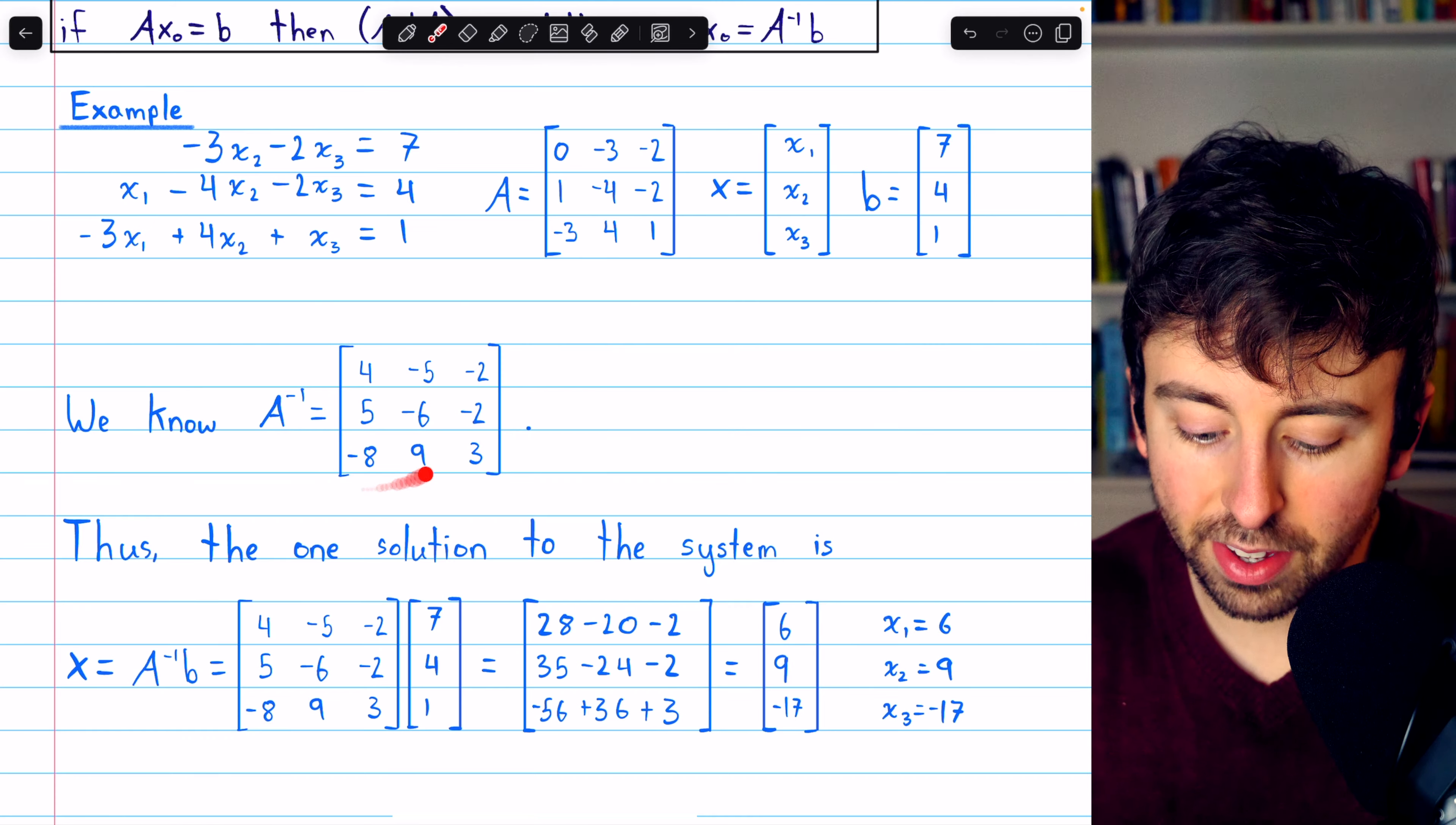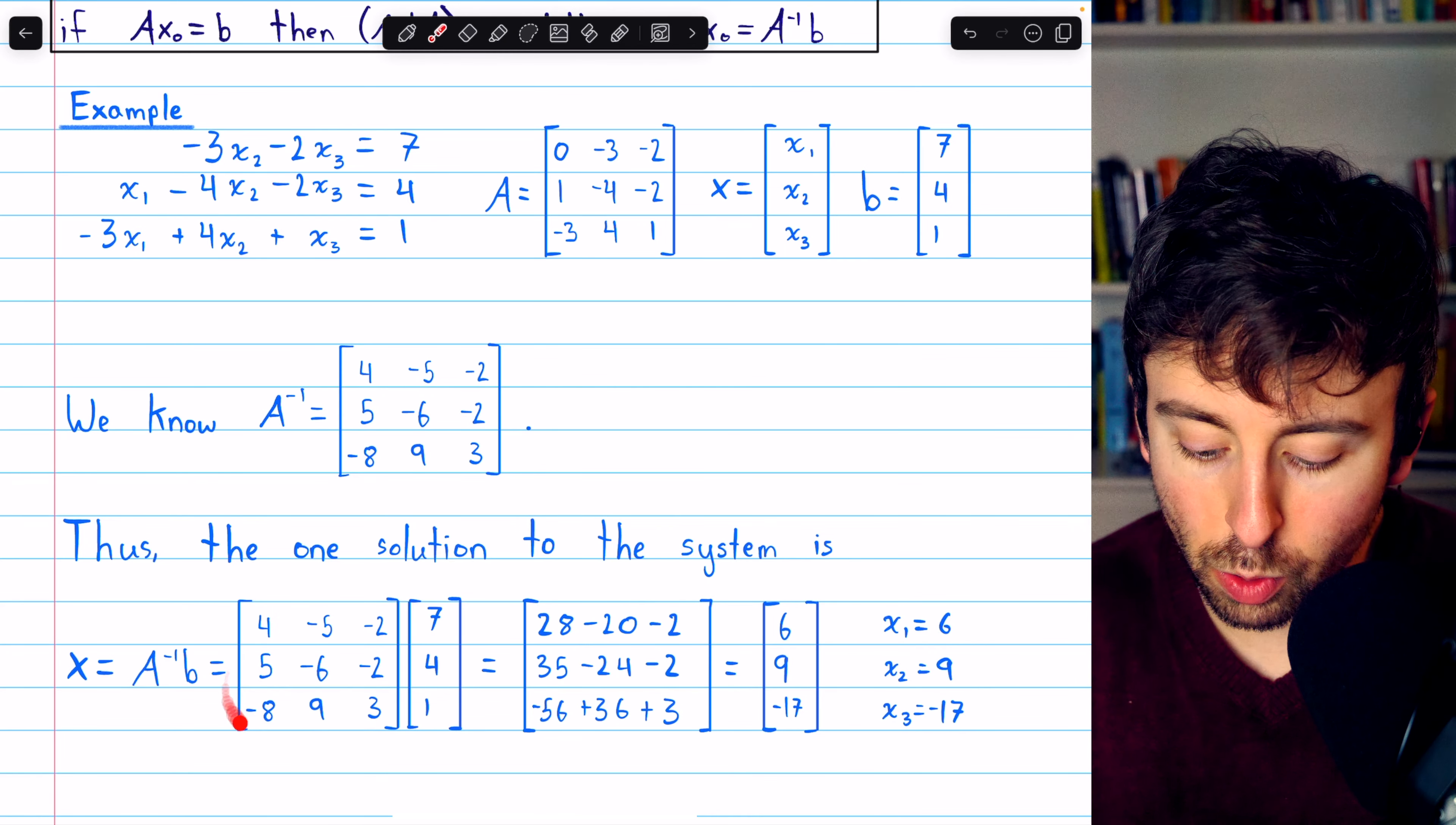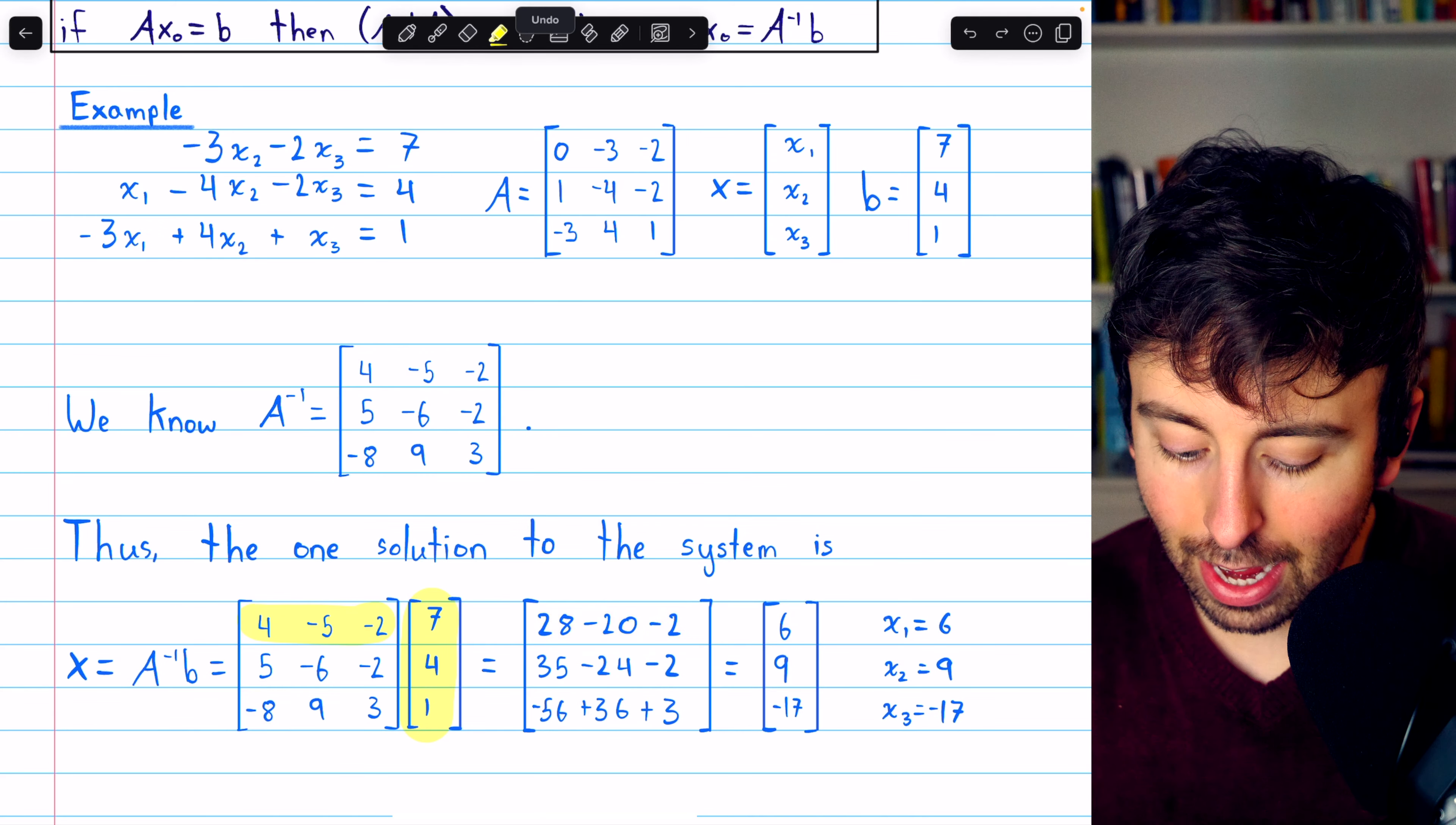Since we know this is A inverse, we can solve the system of equations by simply multiplying A inverse by the column vector containing the constants, B. Now, doing this multiplication gets us here. We would have 4, negative 5, negative 2 matched up with 7, 4, and 1. That produces 6. And so on.